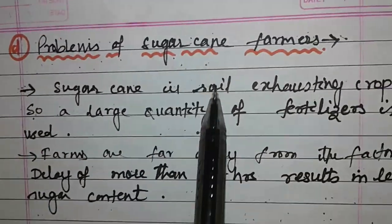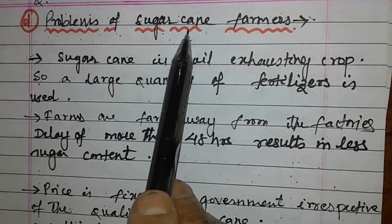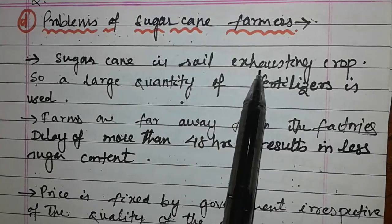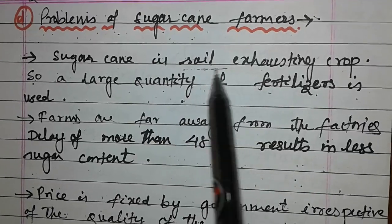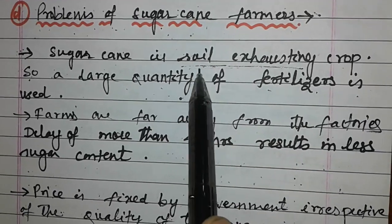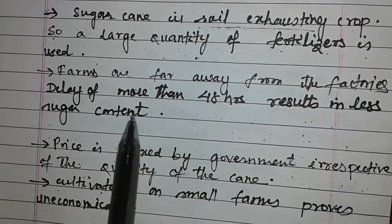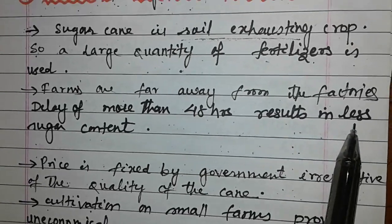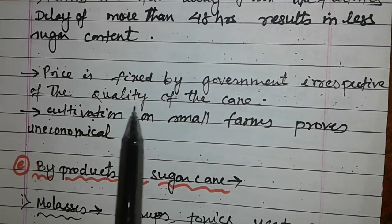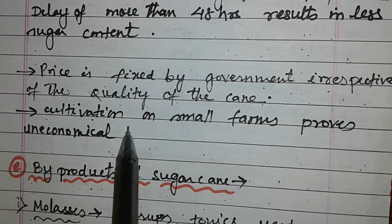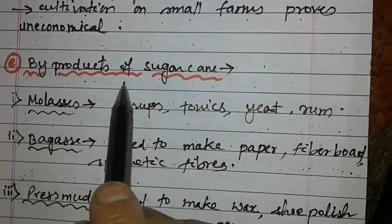Now we will come to the problems of sugarcane farmers — questions may also be asked on this. Sugarcane is a soil-exhausting crop, so a large quantity of fertilizer is used, meaning the fertility of the soil is lost after every single crop. Farms are far away from the factories, and a delay of more than 48 hours results in less sugar content. Price is fixed by the government irrespective of the quality, and cultivation on small farms is uneconomical.